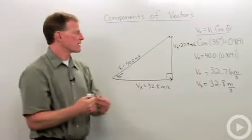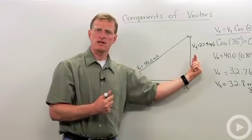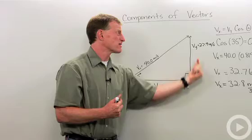So what we've done here is we've taken one vector and broken it down into its x and y components. In this case, a velocity at an angle equals a velocity in x and a velocity in y.